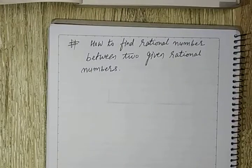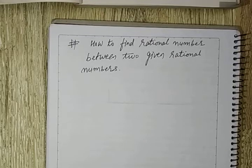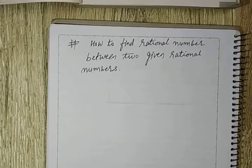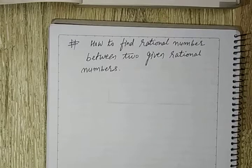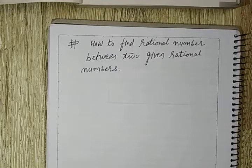Hello students, in this video we will discuss and learn how to find rational numbers between two given rational numbers. In the last video there was an orientation problem, so please keep the mobile horizontal on the surface and see the video nicely. I'll take care of that and rectify things. So I'm taking some questions to discuss today, and we'll discuss more questions in the next video.